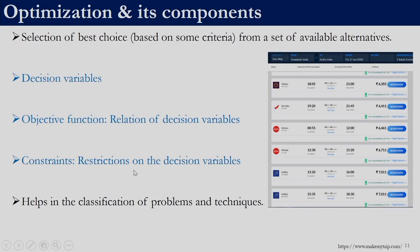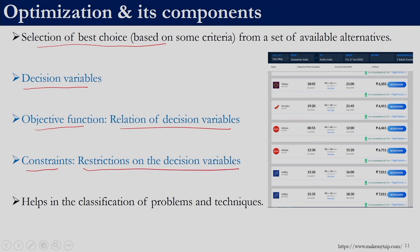Now let us formally look into optimization and its components. Optimization is the selection of the best choice based on some criteria. That decision is called a decision variable — we need to decide something. The objective function is a relation of decision variables which we want to either minimize or maximize. We have constraints which are restrictions on the decision variables. Broadly we have three components: decision variables, objective function, and constraints. Constraints limit what we can do, the objective function is what we want to optimize, and decision variables are those which we can actually change.